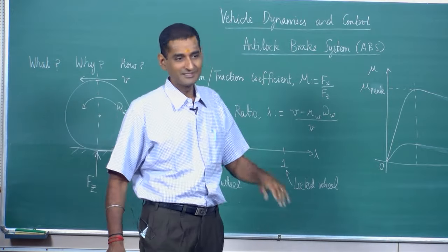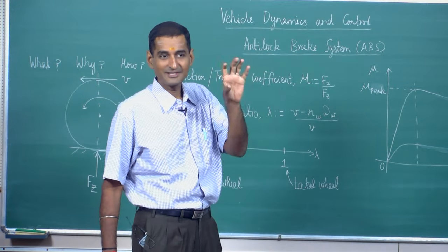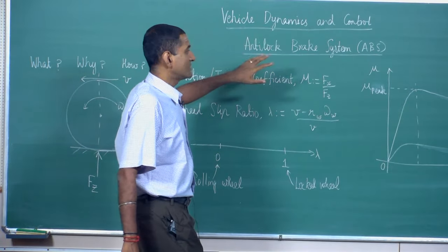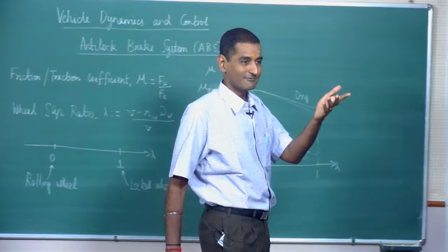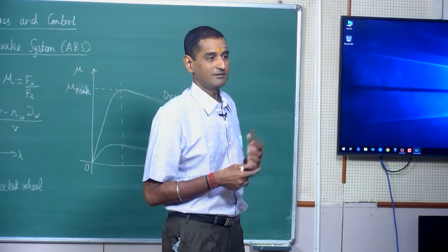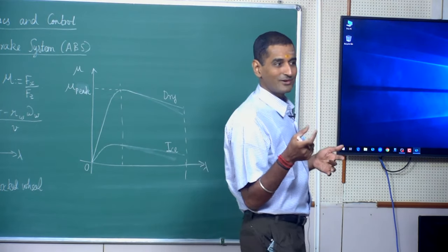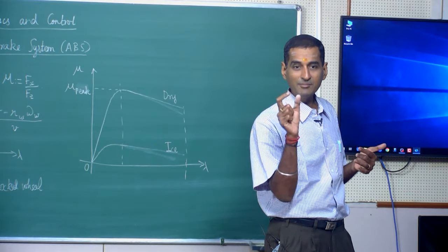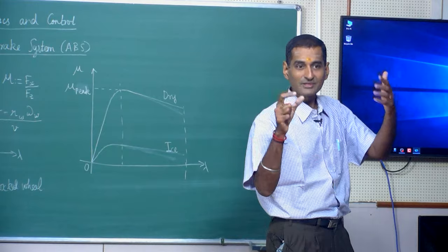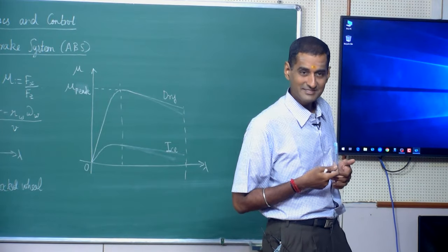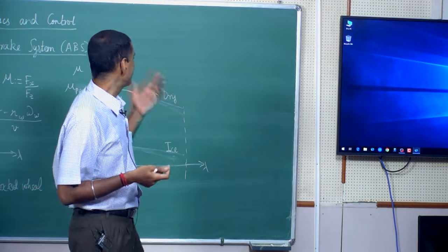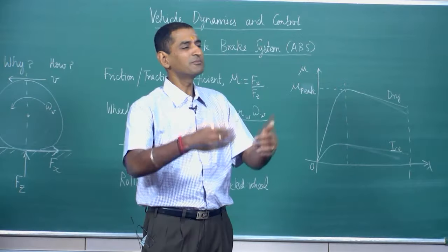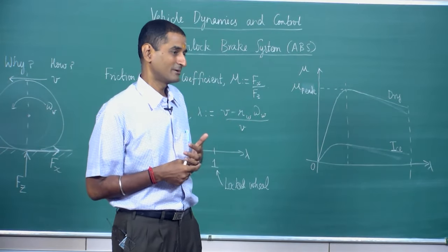One could take other applications and do a similar mapping to get motivated to learning this field of vehicle dynamics and control. I am sure all of us would have heard about ABS. If you travel in a car, it is very likely that the car has an ABS. You would have also seen ABS printed on the rear of the car to demonstrate that it is fitted with an anti-lock brake system — very common in automobiles today, mandated by law in certain classes.